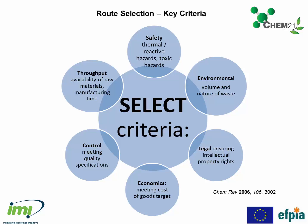We can see some of the subsections here. Under Safety: thermal and reactive hazards, use of toxic materials. Environmental: the environmental impact, the volume and nature of waste. Legal: ensuring intellectual property rights — we don't want to breach anyone's patents. Economics: we've got to meet the cost of goods for the target molecule. Control: we've got to meet the quality specifications. And Throughput: the availability of raw materials and manufacturing time — can we make enough material to satisfy commercial demand?